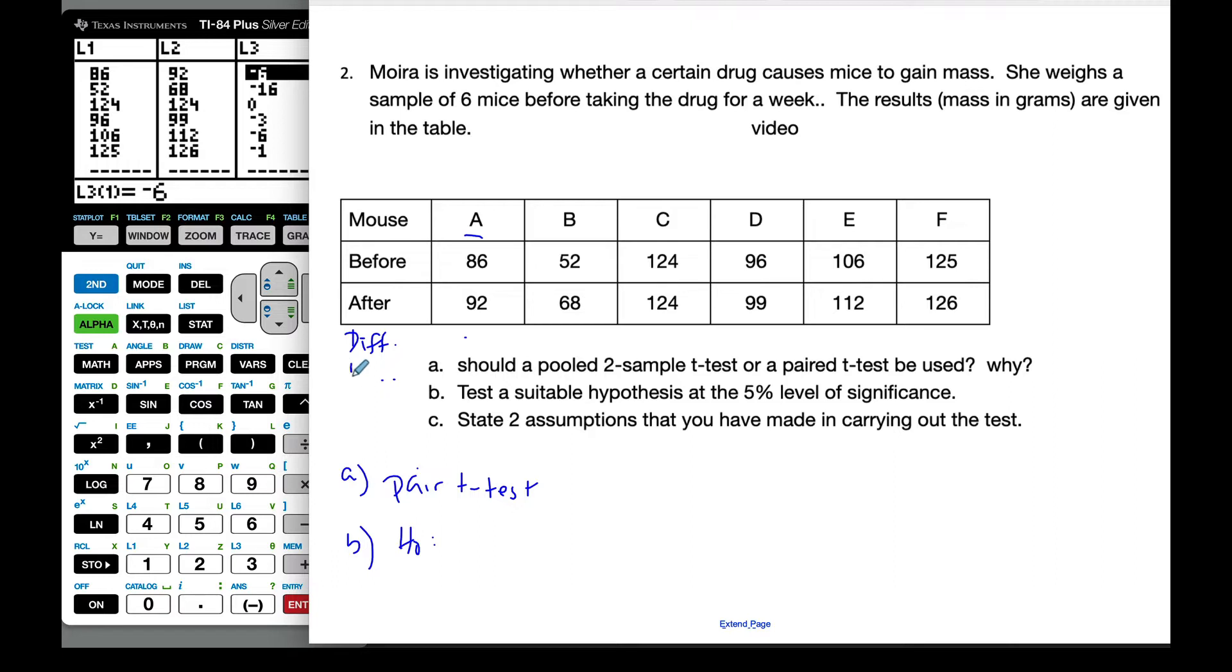And I get, so this is before minus after, and so I get negative 6, 0, negative 3, negative 6, and negative 1. Okay, and so this is the difference. I have to show this.